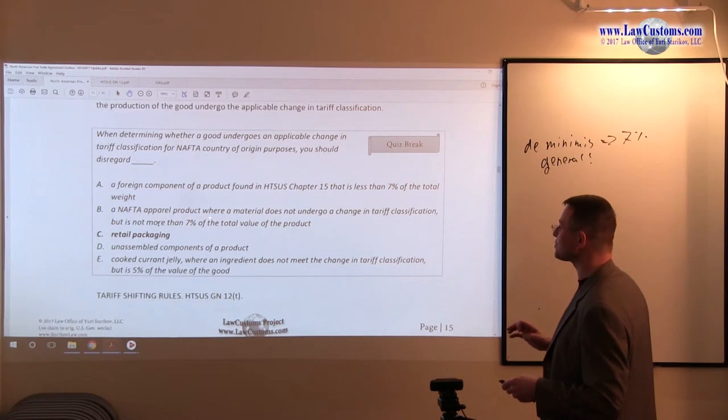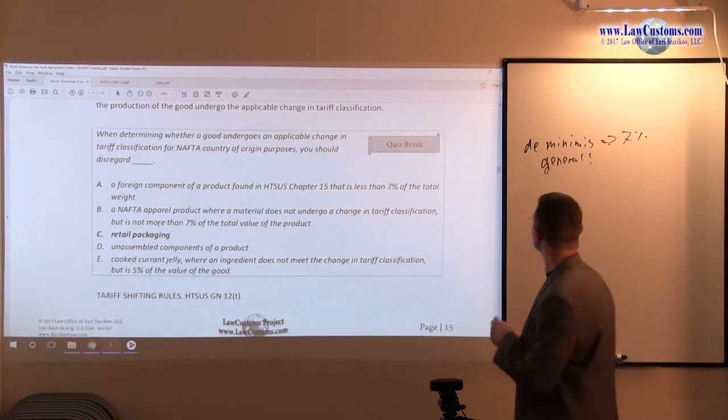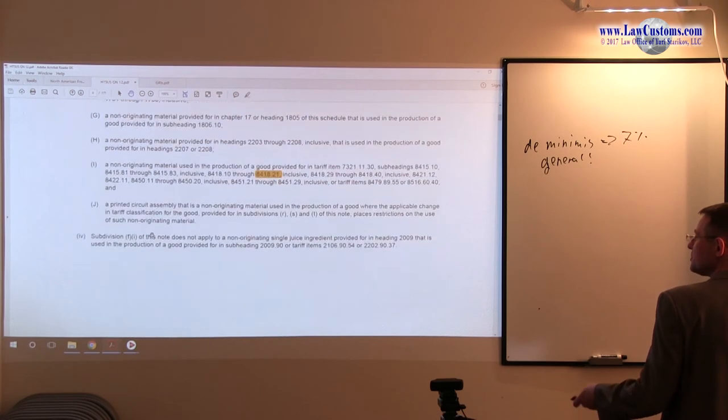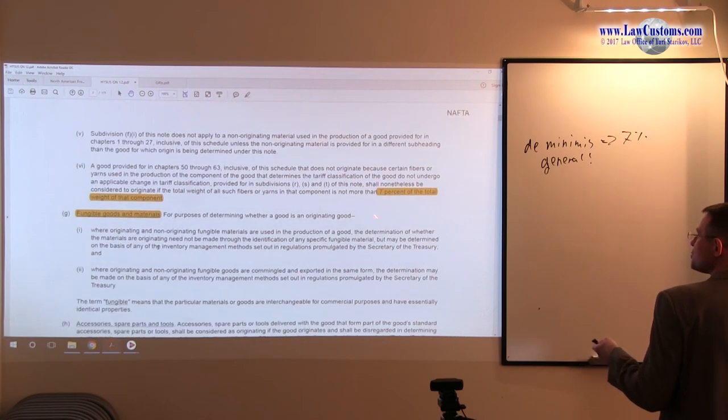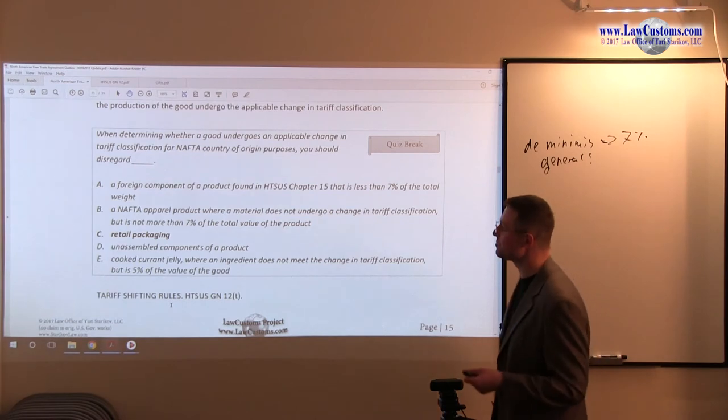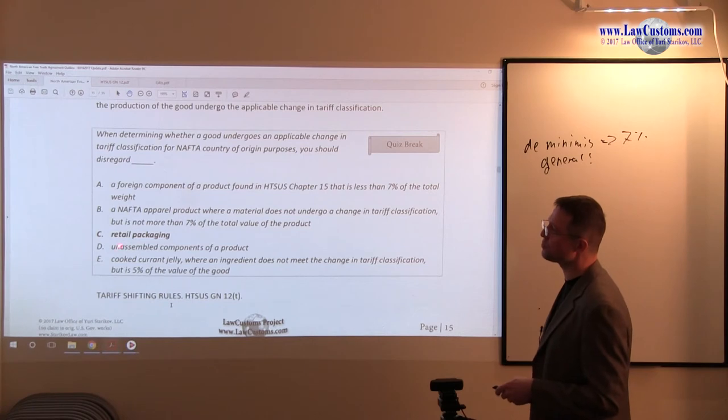B, an apparel product where a material does not undergo a change in tariff classification but is not more than 7% of the total value of the product. So it looks like it fits that 7% rule, right? But recall, with textiles, what we usually have is not 7% of the total value, but 7% of the total weight. We go with the weight. So here it's an incorrect statement of law. It must be 7% of weight, not value, making B also an incorrect answer choice. Well, C we discussed already in certain points, let's go to D.